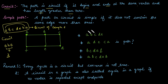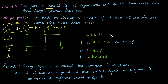Now consider the path a-b-c-d-e. First check if it is a path: a to b, b to c, c to d, d to e — yes it is a path. But the endpoints are different, so it is only a path and not a circuit.